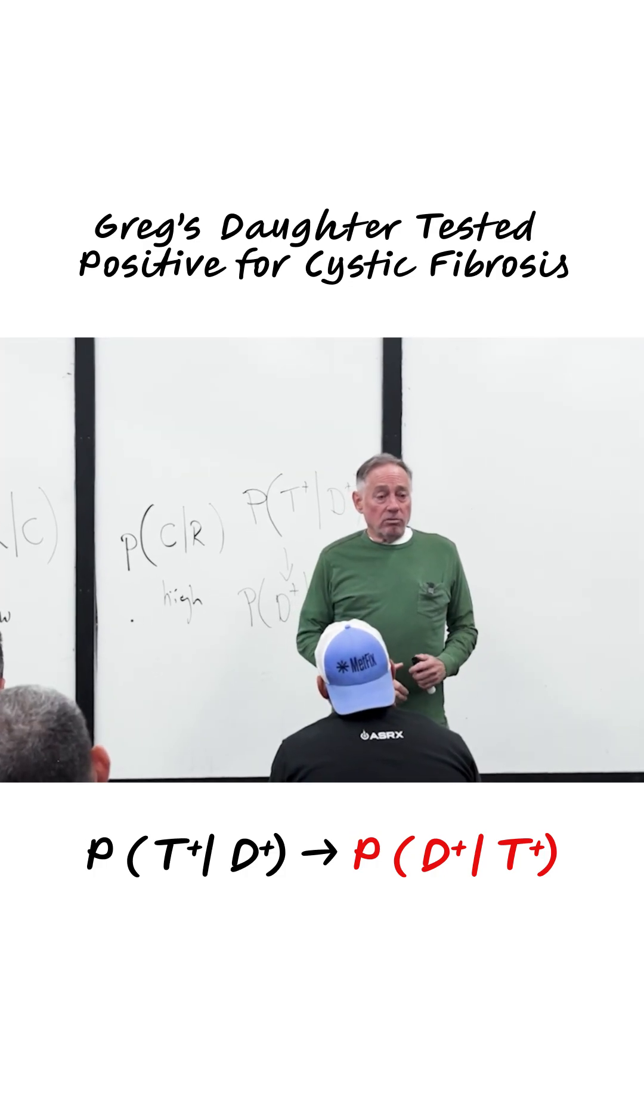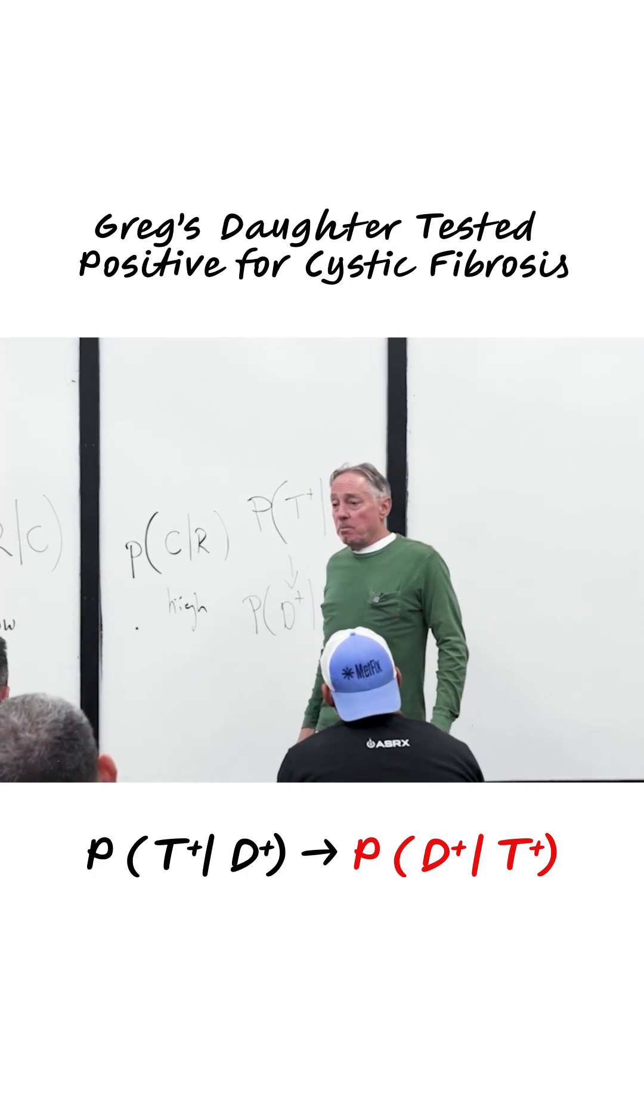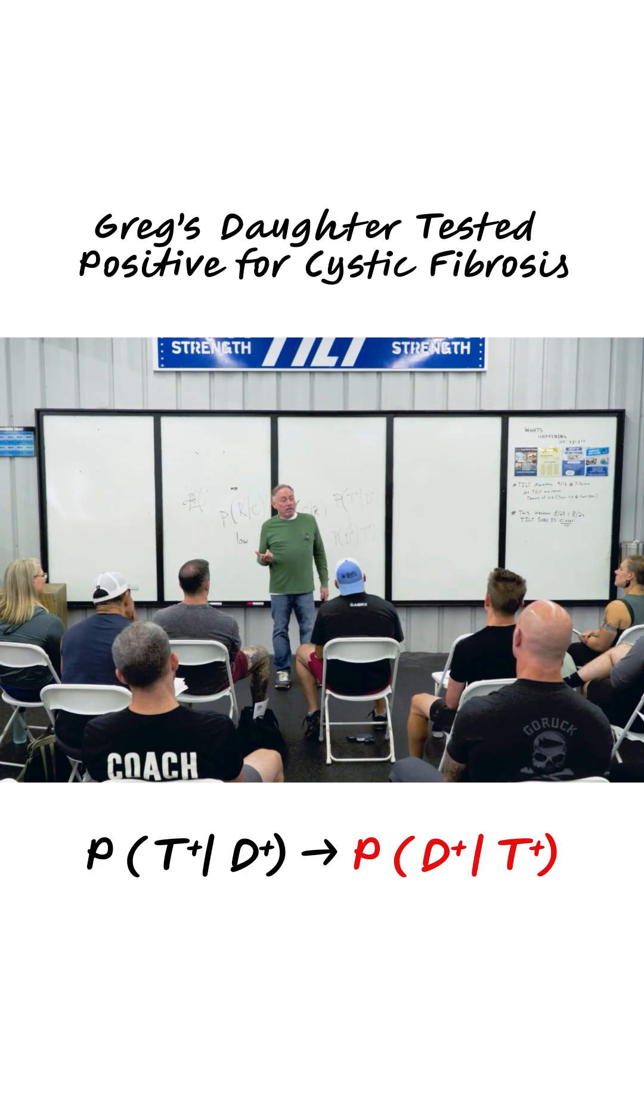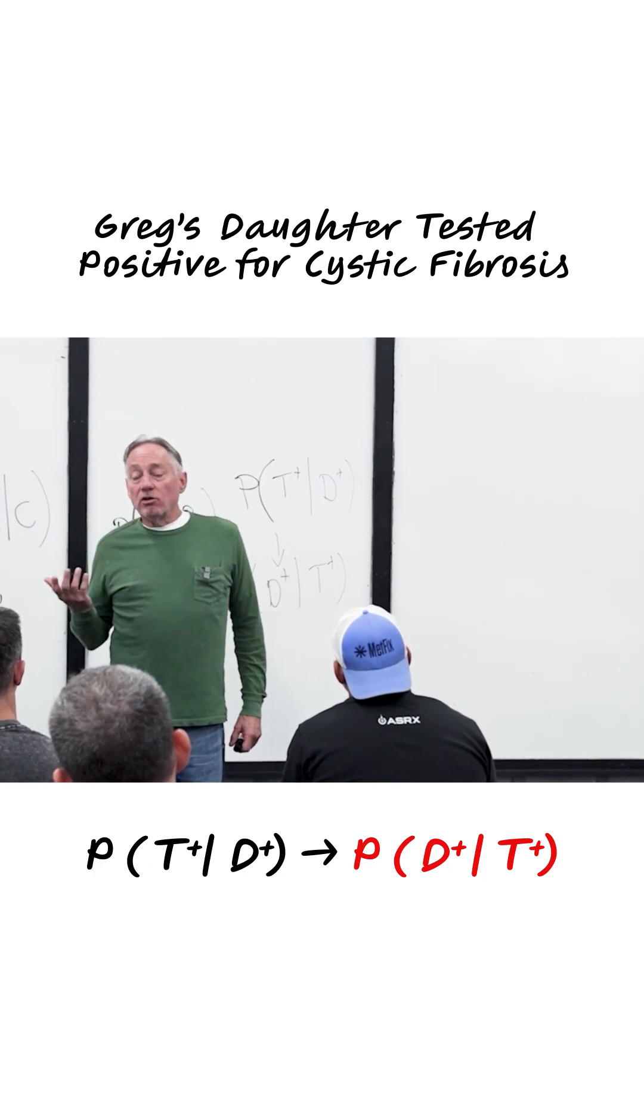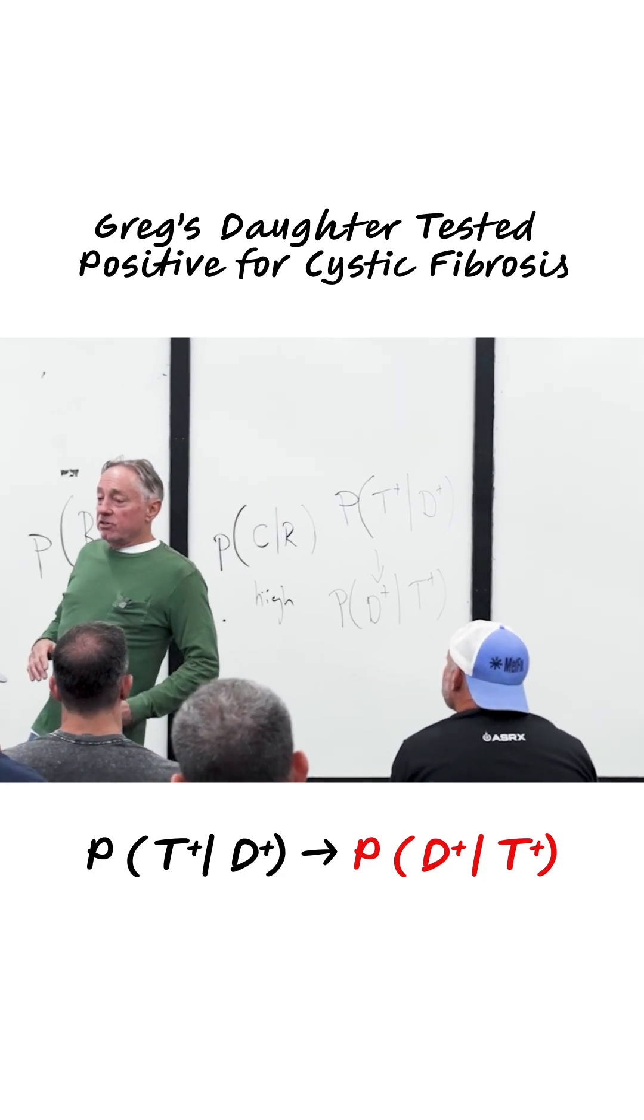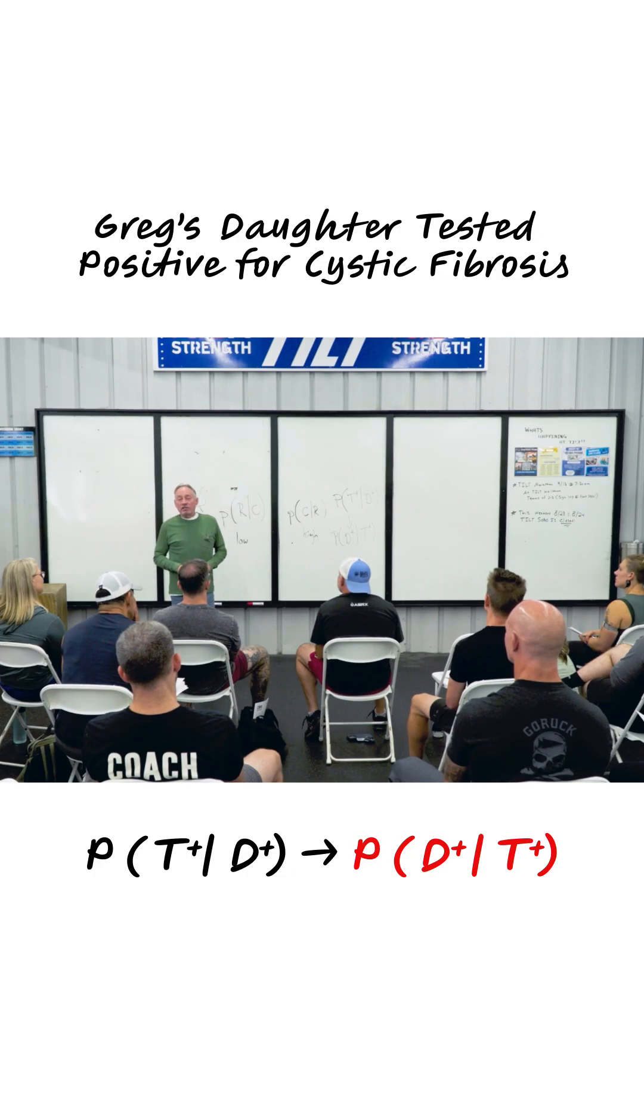So that sounds horrible. It's a horrible thing, cystic fibrosis. What is the positive predictive value on that test? Turns out it's somewhere in the neighborhood of 5 percent. So that means for every 100 people that test positive for cystic fibrosis, five actually have the condition.